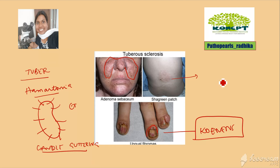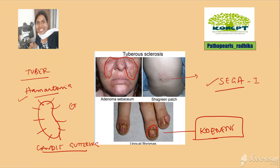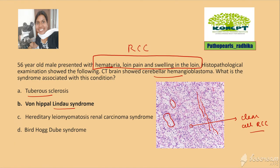These patients can also develop a CNS tumor called SEGA — subependymal giant cell astrocytoma — which is a low-grade, grade one CNS tumor. So remember: hamartomas, SEGA, and Koenen's tumor. They can also develop angiomyolipoma, which has a vascular component, muscular component, and adipocytic component.